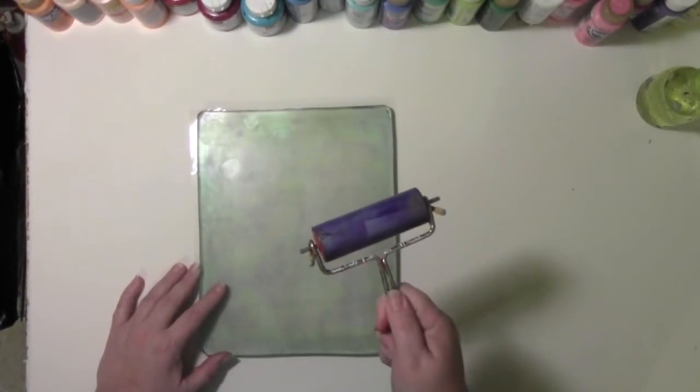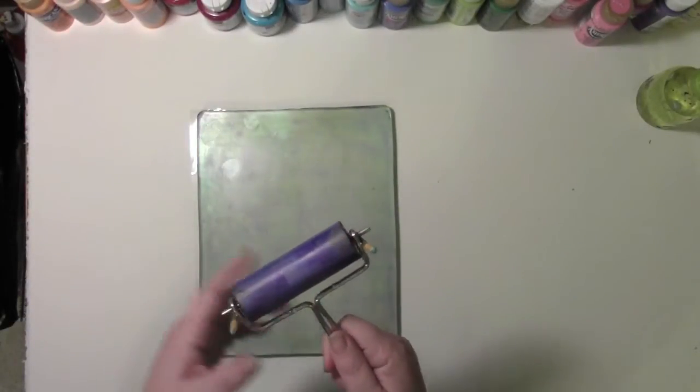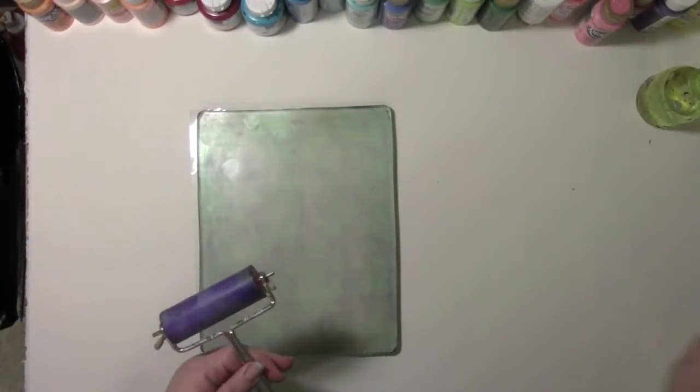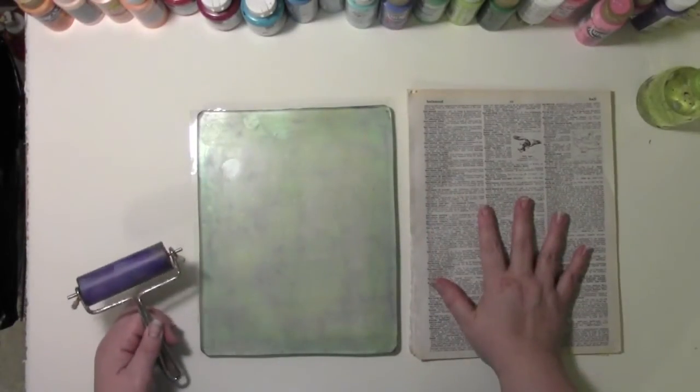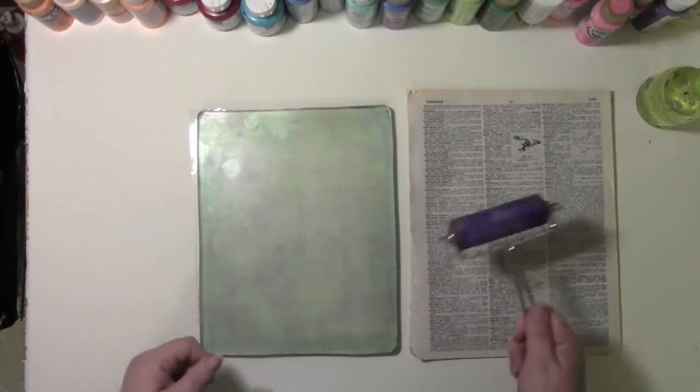You will need a rubber brayer. You can see here I don't clean it, and it still works great. I do wipe off the excess paint, and to do that, I am going to use some old dictionary pages as scrap paper. It also makes some great backgrounds, too.